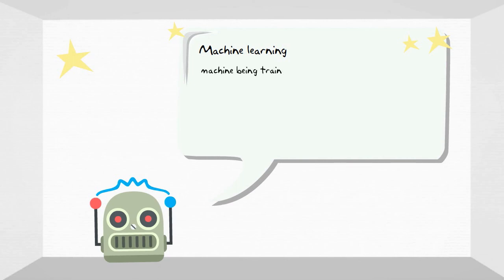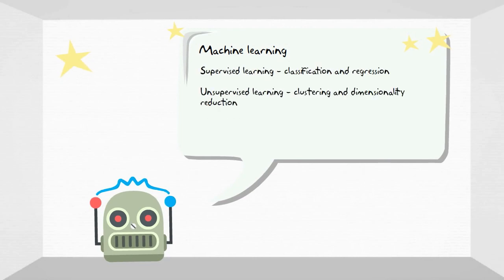In summary, machine learning is the process of the machine being trained with datasets, such that it can solve the same problem with data it hasn't seen before. In supervised learning, there are two types: classification and regression. In unsupervised learning, there are clustering and dimensionality reduction.